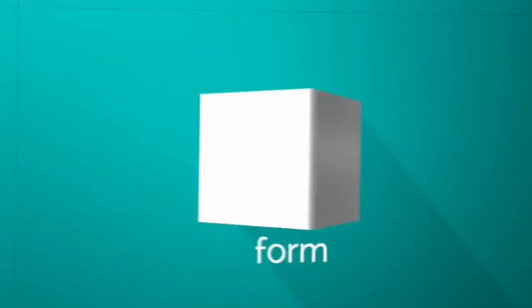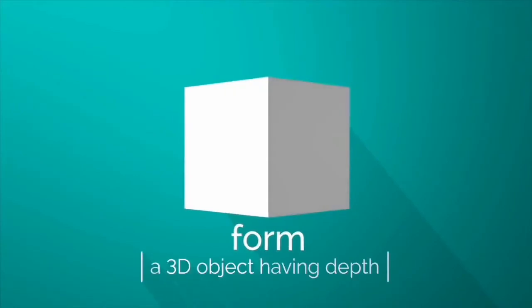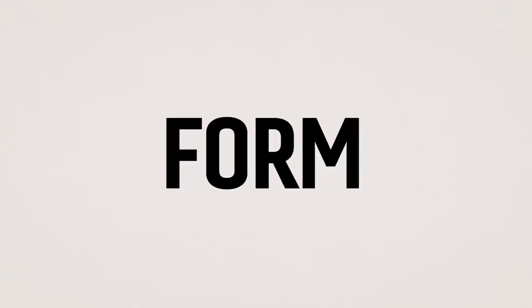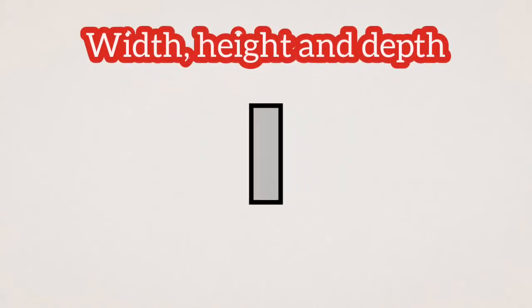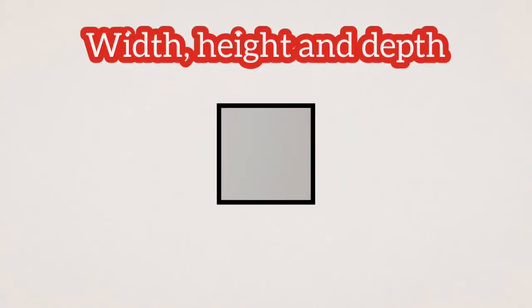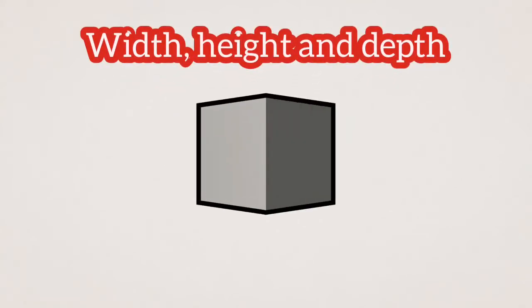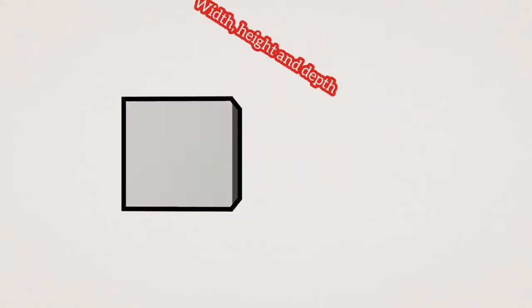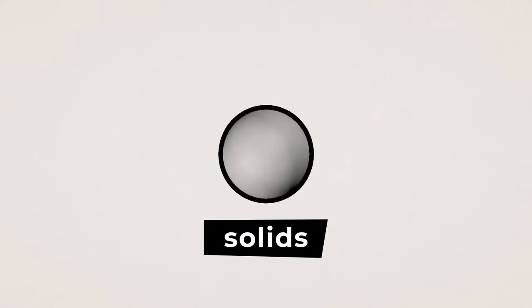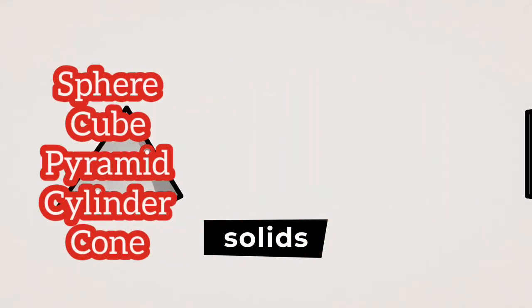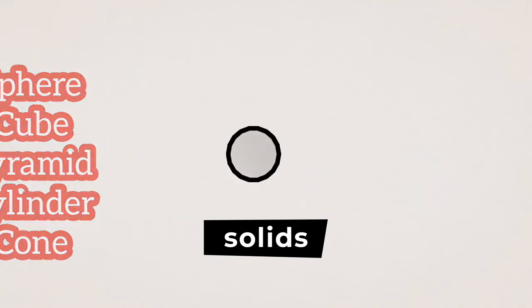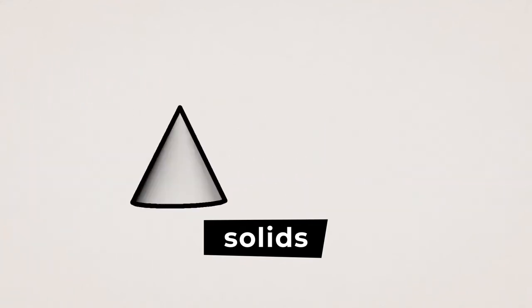Another element of design is form, which is a three-dimensional object — that is, an object having width, height, and depth. Form is classified into solid shapes, and these shapes include sphere, cube, pyramid, cylinder, and cone.